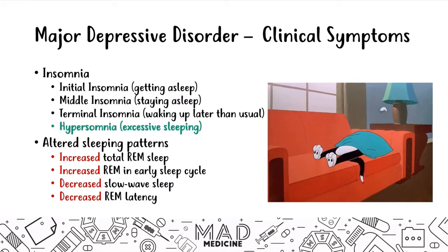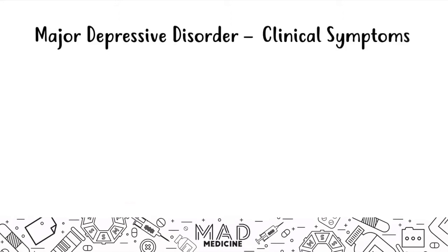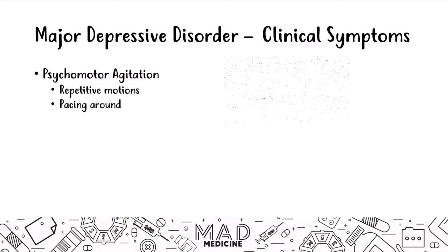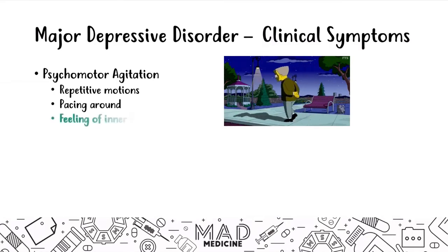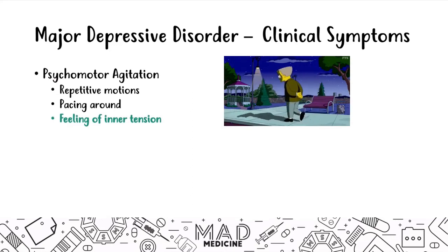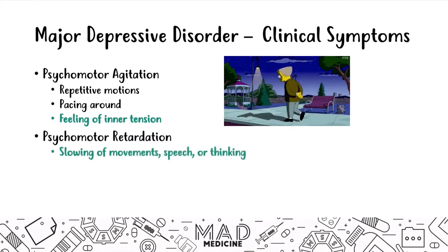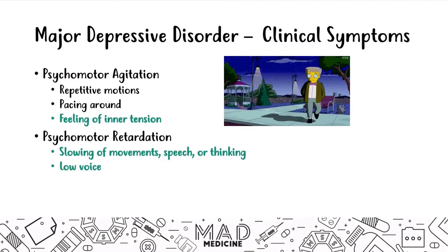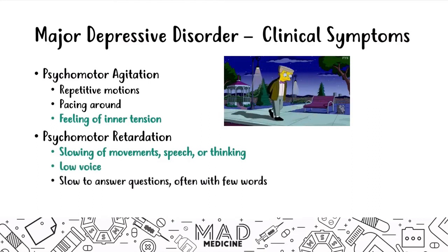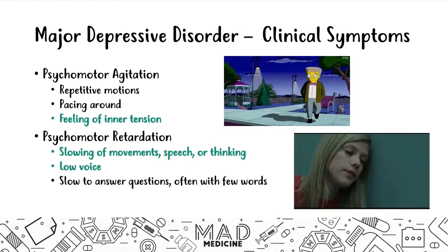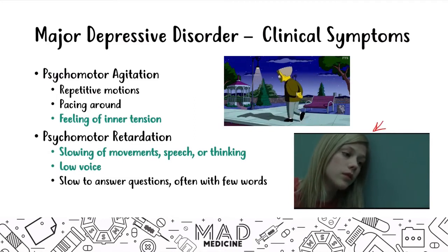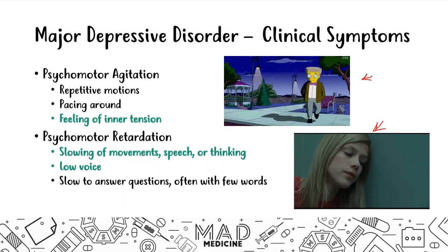Regarding psychomotor agitation, many patients have repetitive motions, pace around, feel uncomfortable, and experience inner tension — something they feel they need to fix but can't. Psychomotor retardation is the opposite: everything feels slowed down. They talk and think very slowly, have a very low voice, flat affect, are slow to answer questions, and often respond with very few words. Psychomotor agitation involves going over and over in circles, while retardation involves nearly the opposite presentation.